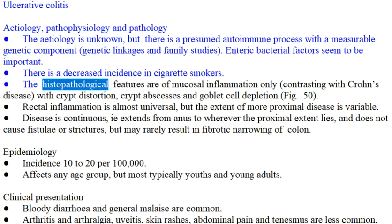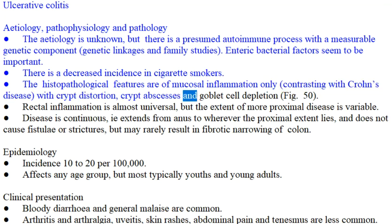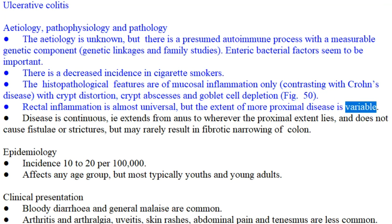The histopathological features are of mucosal inflammation only, contrasting with Crohn's disease, with crypt distortion, crypt abscesses, and goblet cell depletion (Fig. 50). Rectal inflammation is almost universal, but the extent of more proximal disease is variable.